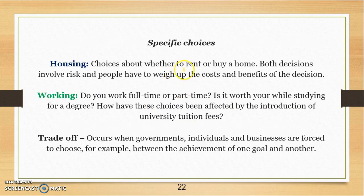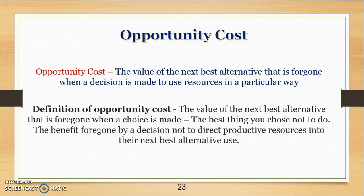Specific choices might be whether to rent or buy a home, weighing the costs and benefits of each decision; whether to work part-time or full-time; or whether to study while doing a degree. Governments, individuals, and businesses all have to make choices. When we make a choice it involves trade-offs — a trade-off is all the other things we give up. The specific next best alternative when we make a choice is referred to as the opportunity cost.